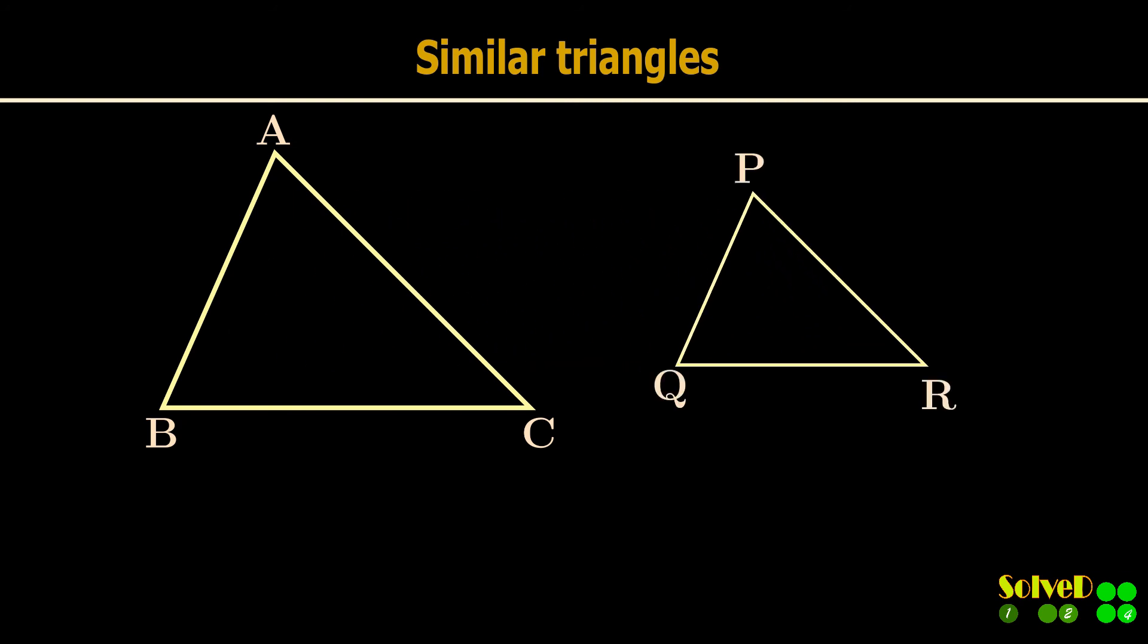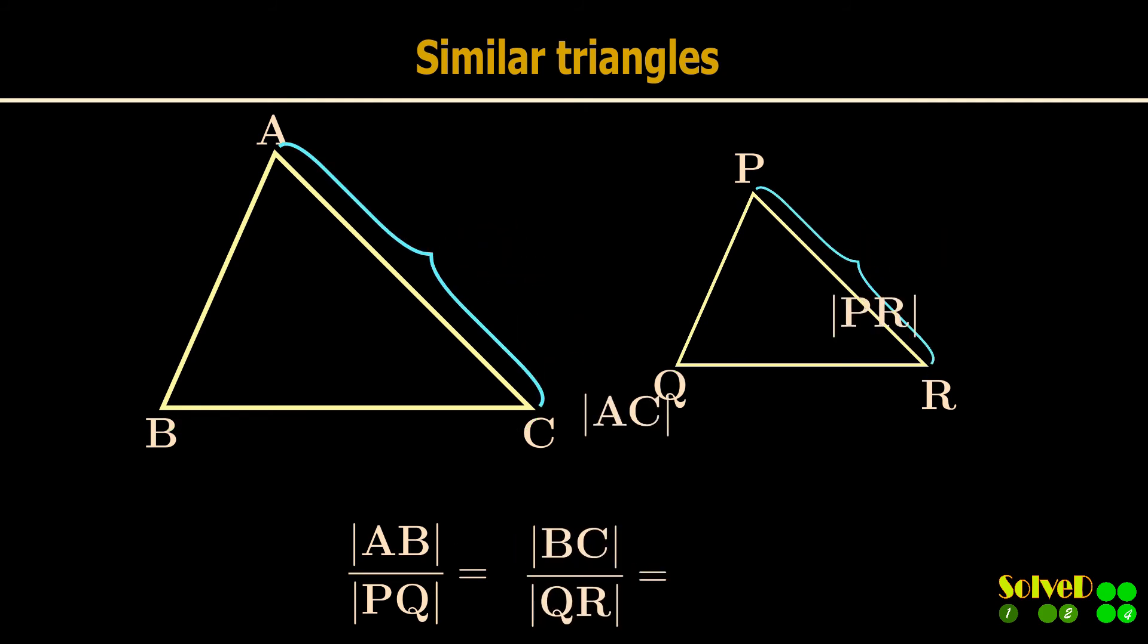Two triangles are similar if their sides are proportional; that is, all these ratios are equal as shown. In other words, similar triangles have the same outline or shape but not necessarily the same size.